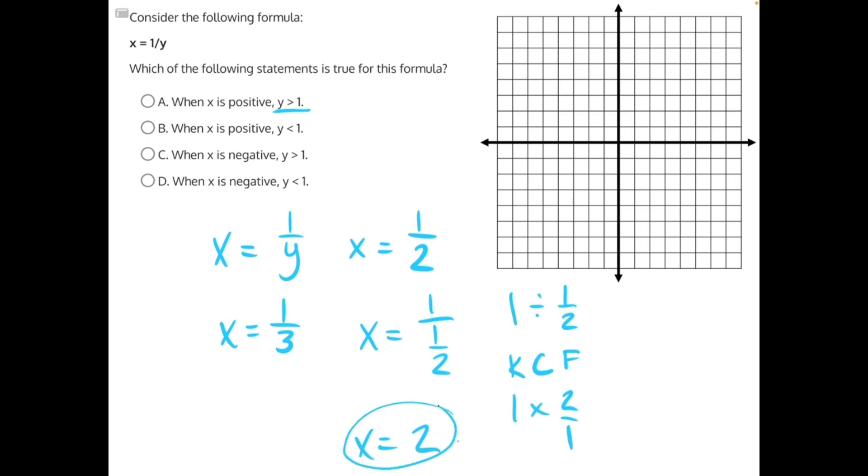That is also a positive value for x that we would have missed if we would have stayed in this range. So that means that y is greater than 1 does not cover all the positive values for x, and that makes it incorrect.